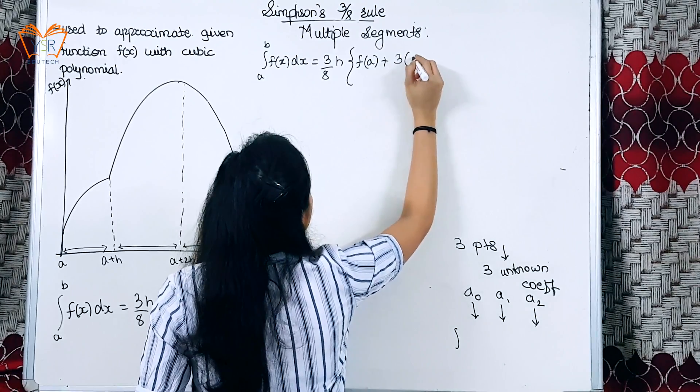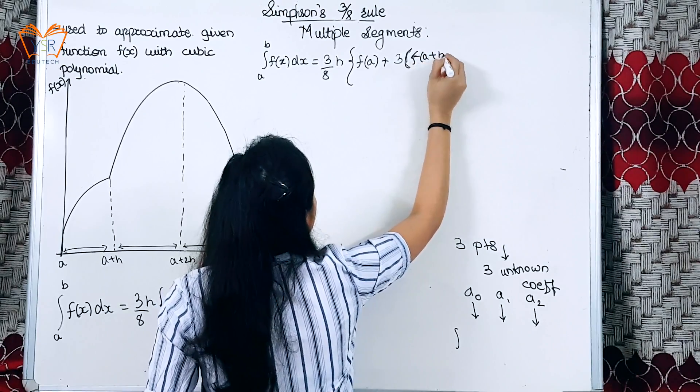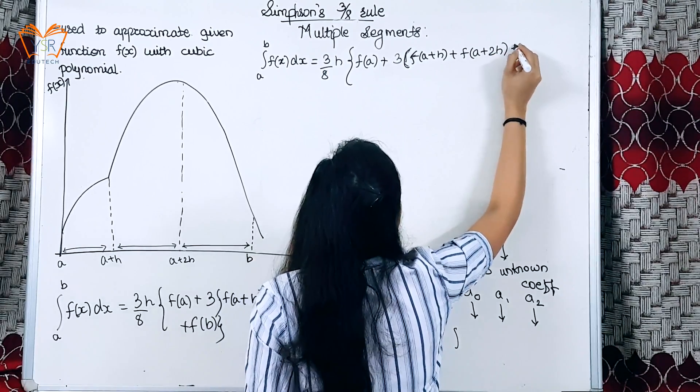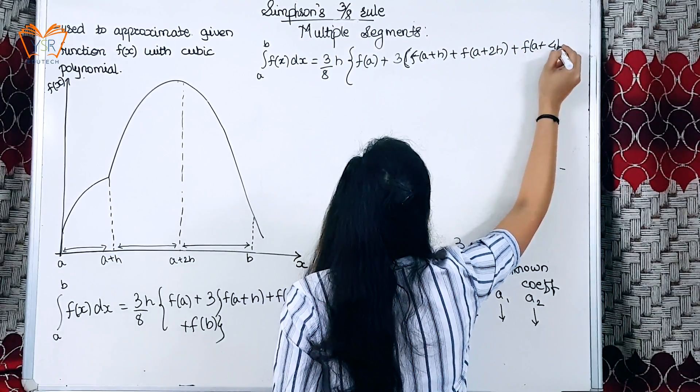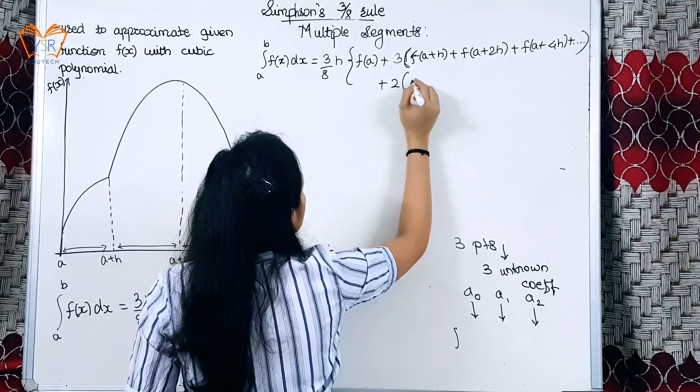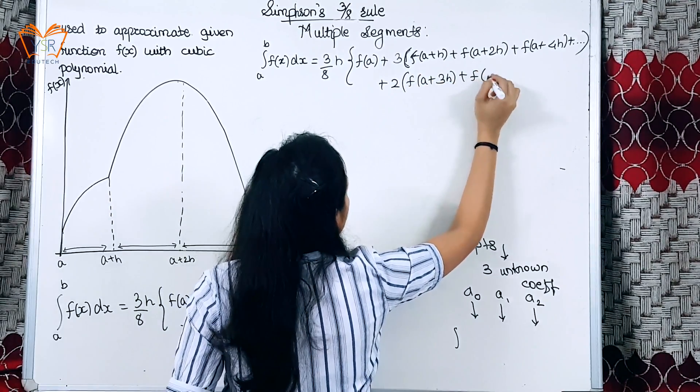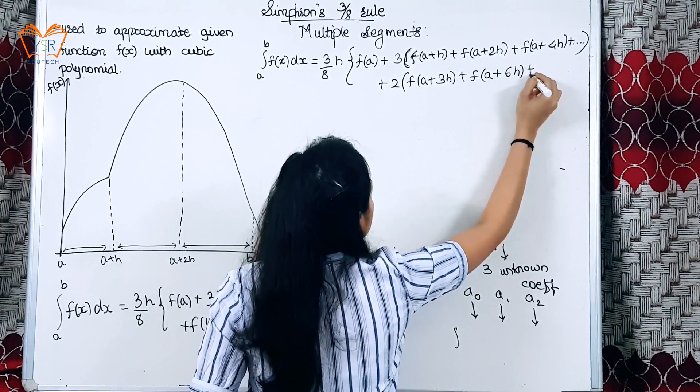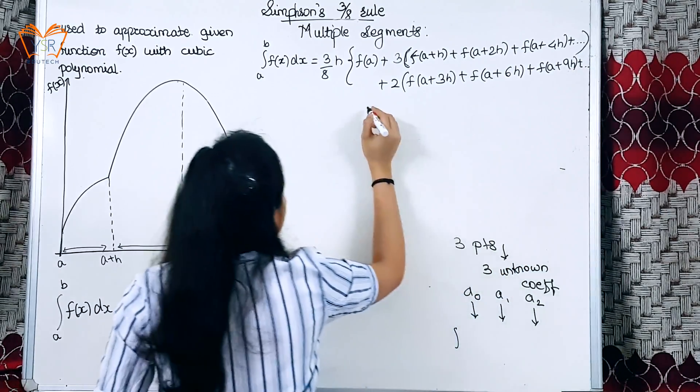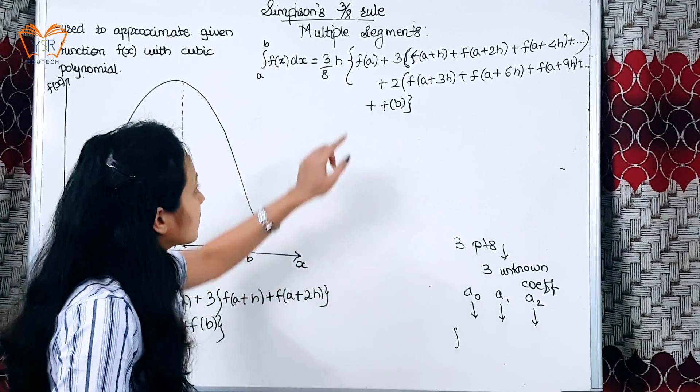3[f(a+h) + f(a+2h) + f(a+4h)] and so on, plus 2[f(a+3h) + f(a+6h) + f(a+9h)] and so on, plus f(a) plus f(b). Now, if you observe the formula...